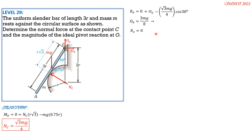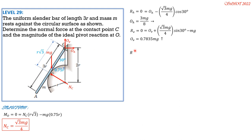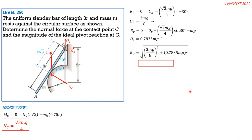Setting ΣFy = 0: OV + Nc sin 30° − Mg = 0, so OV = Mg − (√3 Mg/4)(1/2) = 0.7835 Mg upward. The magnitude of the ideal pivot reaction at O is RO = √((3Mg/8)² + (0.7835 Mg)²) = 0.8686 Mg.